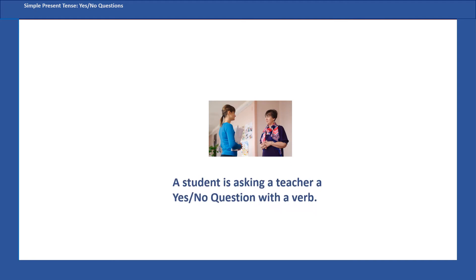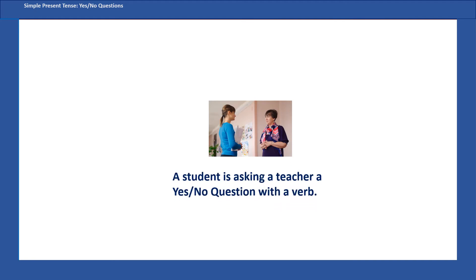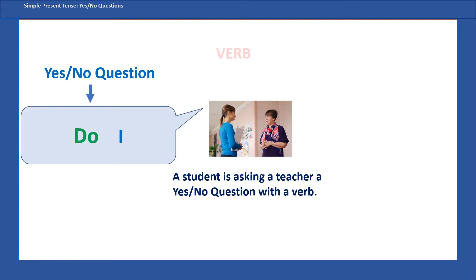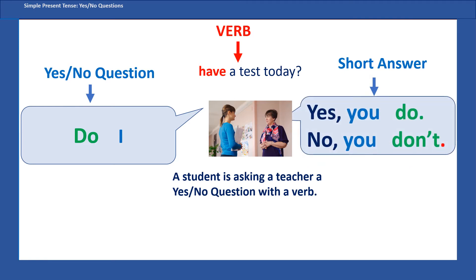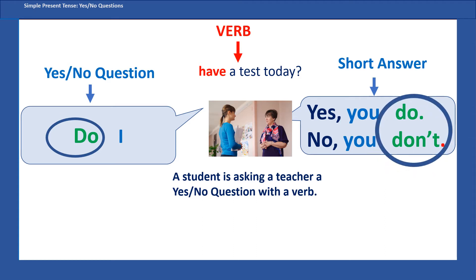Now a student is asking a teacher a yes/no question with a verb. To make the question you need the helping verb 'do.' Do I have a test today? The teacher can say 'Yes, you do' or 'No, you don't.' In the question the first word is the helping verb 'do,' and in the short answer you have 'don't.' You see the helping verb in both the yes/no question and the short answer.